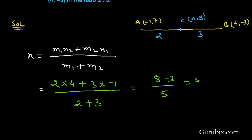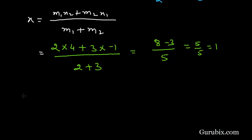This means (8 − 3) / 5, which equals 1. Now we shall apply the section formula for the Y coordinate of the point.